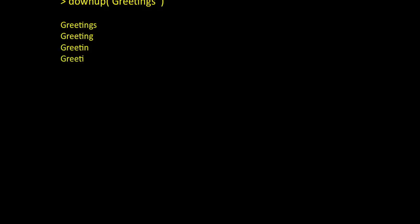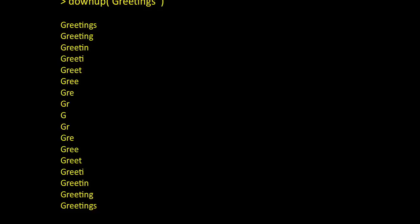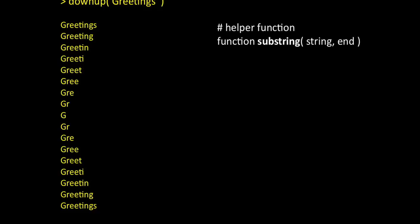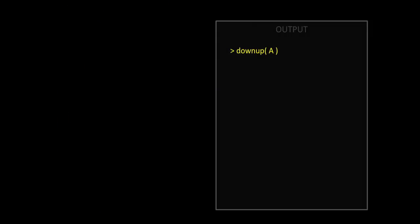In our previous cereal eating example, breaking down the problem into simpler pieces was fairly straightforward. Now let's look at a slightly more complex problem. We would like to write a function, downup, that takes an input string and prints out progressively smaller and larger substrings of the word. To help us work with strings, we have a helper function, substring, which extracts a portion of a string beginning from the first character up through a specified index. Following the framework we discussed earlier, what is a simpler version of downup that we can easily handle? How about downup of a single letter string? The desired output is achieved by simply printing the string.